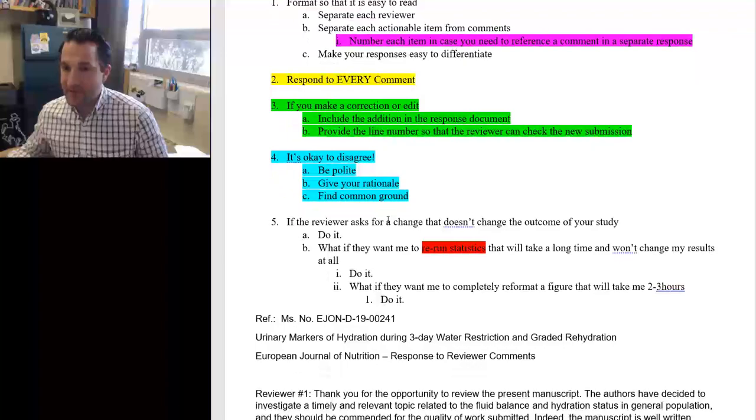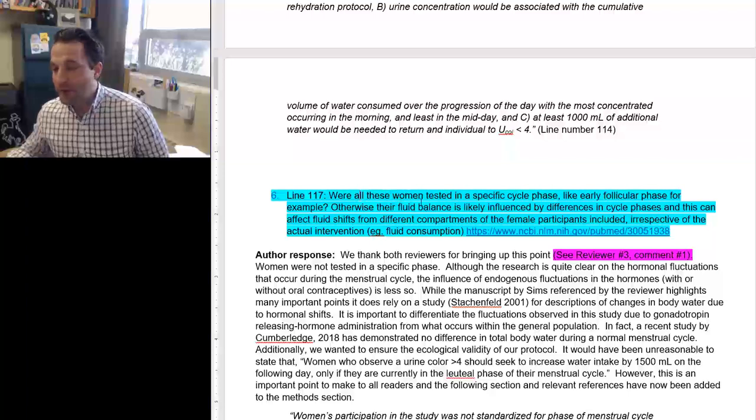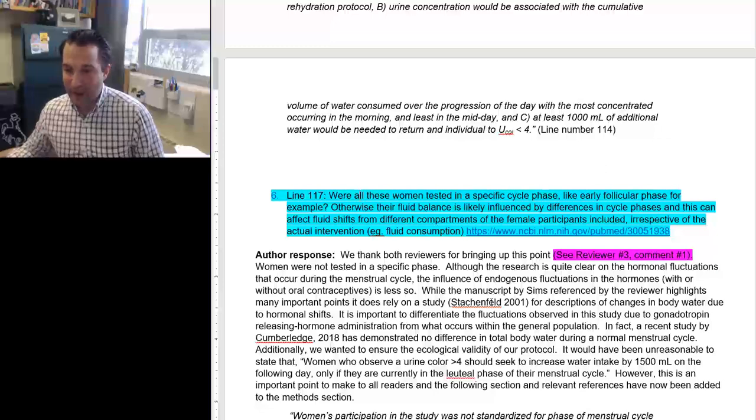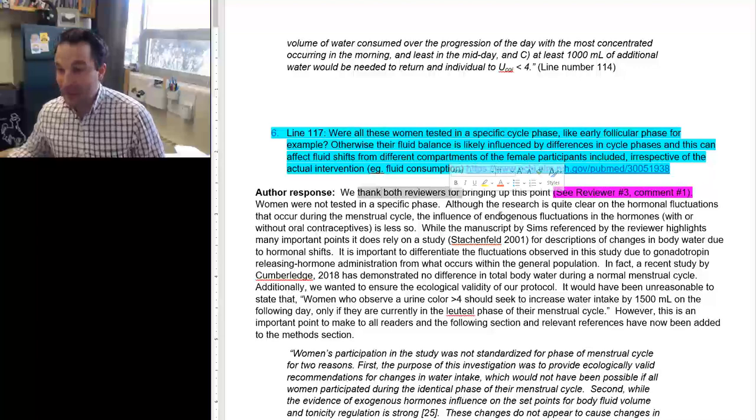And then, the last thing I found that is nice about this is to find some common ground. So, let's look at an example from one of our responses. And we gave the example before. This person wants to know, okay, there were women who were tested, likely early proliferative phase, for example. Were they in a specific cycle phase? Because we know that fluid's balance is influenced by that. My study did not rely on that. And actually, the data out there about fluid changes during different phases of the menstrual cycle is not that hard and fast. So, what I did was, first, I thanked the reviewers to bring it up.